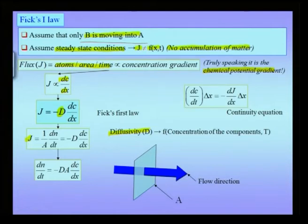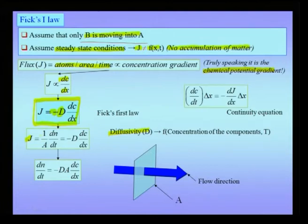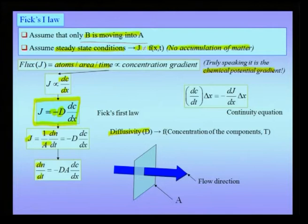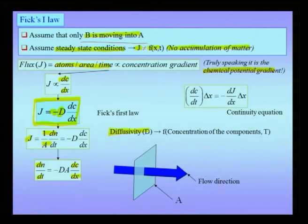The expression for flux written in the blue box is called Fick's First Law, which states J = −D (∂c/∂x). The negative sign implies that the flux is down the concentration gradient. Writing J = (1/A)(dn/dt), we get dn/dt = −D·A·(dc/dx) — in other words, the concentration gradient is related to the number of atoms crossing this area per unit time. The heart of this expression is the material parameter diffusivity, which depends not only on temperature but also on the kind of species diffusing and the mechanism of diffusion. Additionally, diffusivity could also be a function of the concentration of the components.